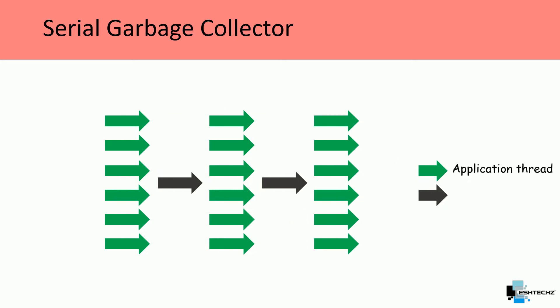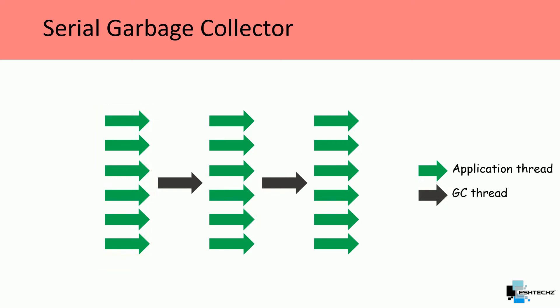In the diagram, the green ones are application threads and the gray ones are GC threads. We have multiple application threads but a single GC thread. Whenever this GC thread runs, it causes stop-the-world pauses, and since we use a single thread, the pauses are long.